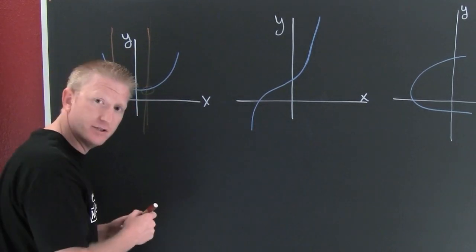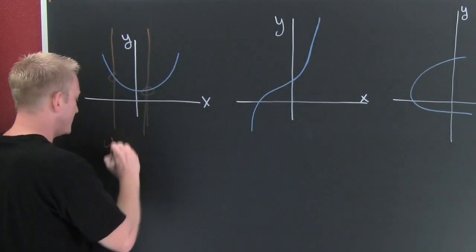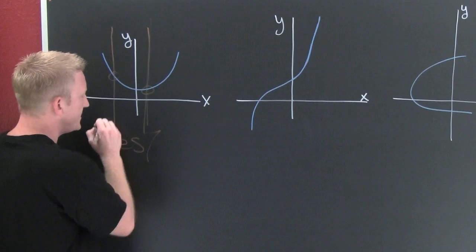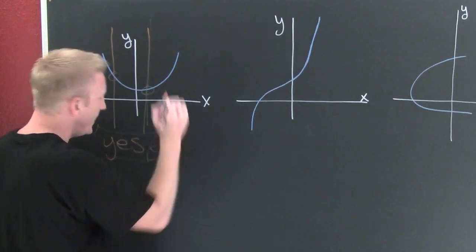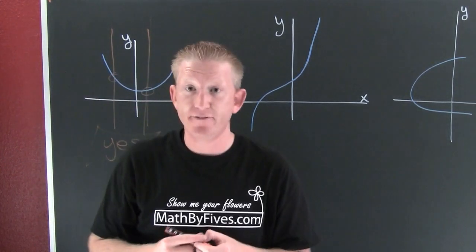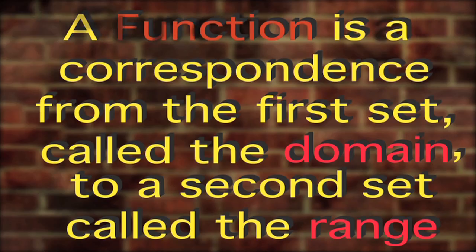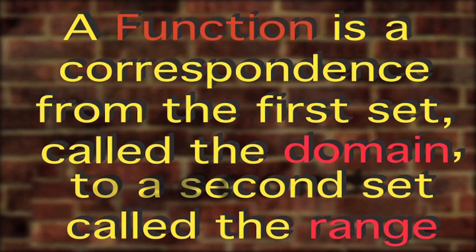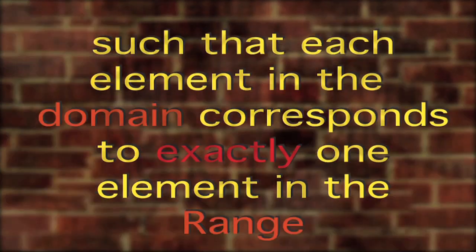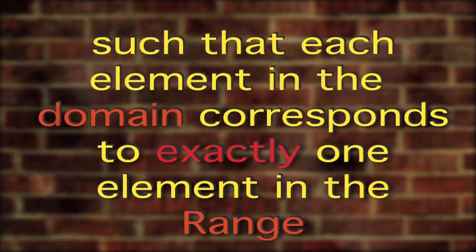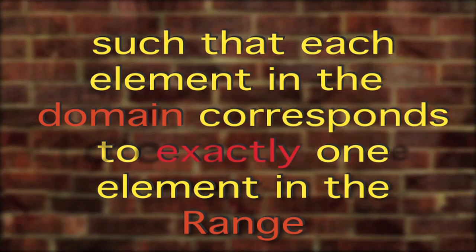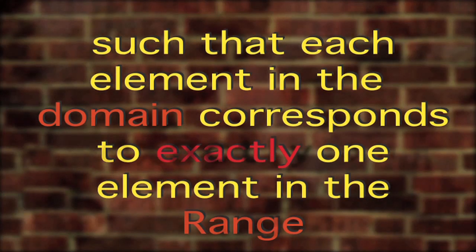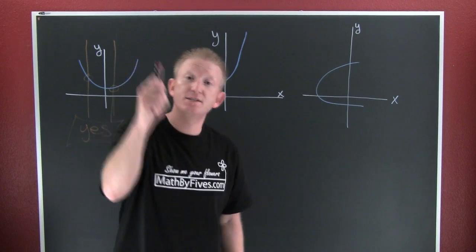Oh boy, this has to be true for every vertical line. So by inspection, is this one a function? Yes, this is a function. And here's why. Let's go back to the definition of a function. A function is a correspondence from the first set called the domain to the second set called the range, such that each element in the domain corresponds to exactly one element in the range.